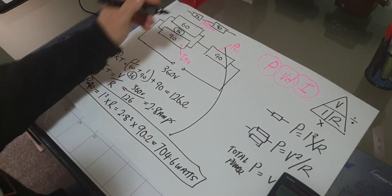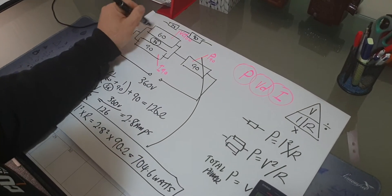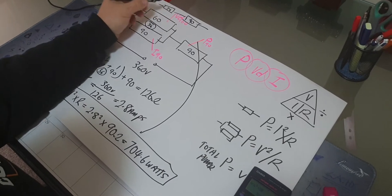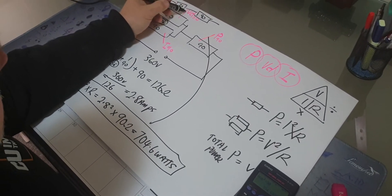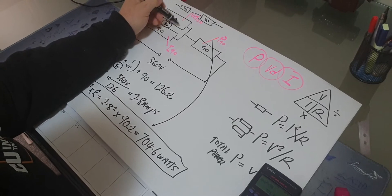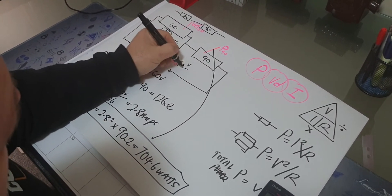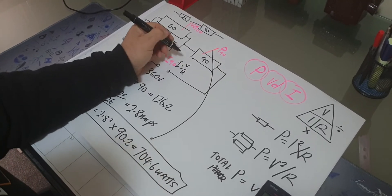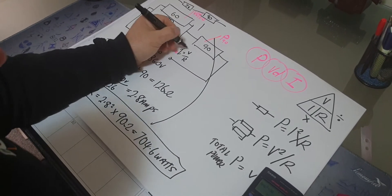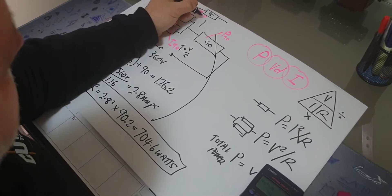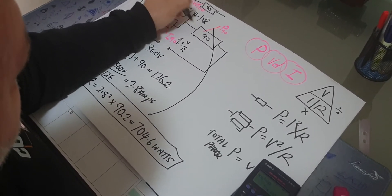The next part: when we look at something in parallel — whether it's power, voltage drop, or current — if we're asked for current using I equals V over R, we need the voltage drop across those two parallel resistors. Voltage drop equals I times R.